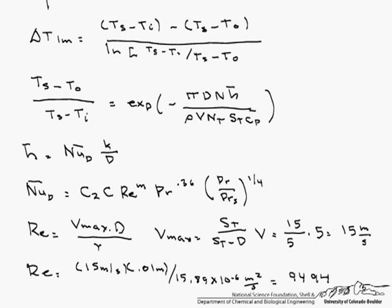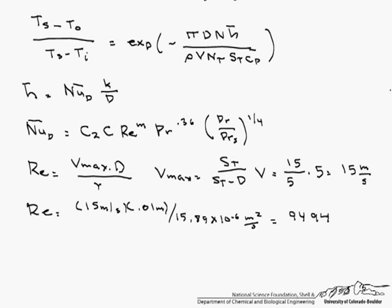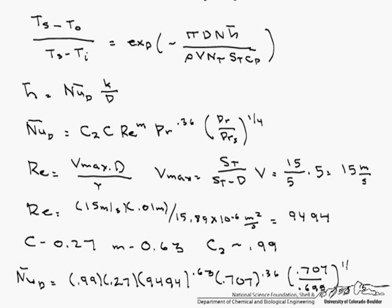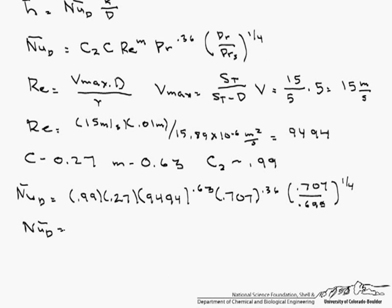We go to the appropriate table, which gives us C and M based on the Reynolds number. Our C is 0.27, our M is 0.63, and our C_2 — because we have fewer than 20 tubes in the longitudinal direction — is approximately 0.99, so not a big correction factor. Our Nusselt number is 0.99 × 0.27 × 9494^0.63 × Pr^0.36 × (Pr / Pr_surface)^(1/4), giving a Nusselt number of 75.9.